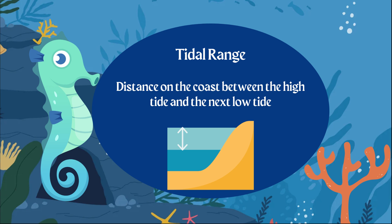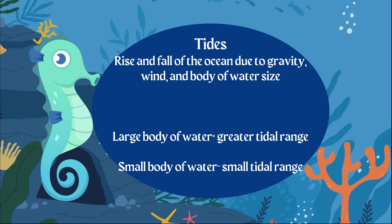Tidal range — think of it like a range of numbers. You take the high and the low, and find the distance between them. So tidal range is the difference between the high tide and the next low tide.